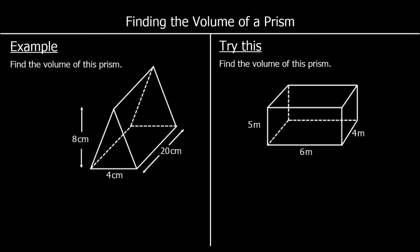A prism is a shape that's the same the whole way through. In this first example we've got a triangle on the front, and if you cut through this shape at any point you would find exactly the same triangle. So it's the same triangle the whole way through.